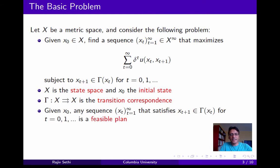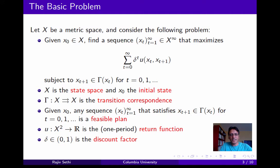Given any x0, any sequence xt that satisfies the constraint that xt+1 is in the image under gamma of xt for all periods t is called a feasible plan. The function u, which depends on both xt and xt+1, is referred to as the one-period return function. Delta, assumed to lie strictly between 0 and 1, is called the discount factor.